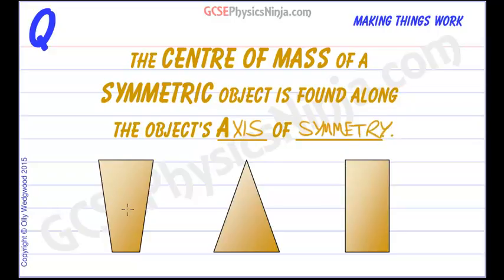So, for example, if we take these three objects here, this trapezium shape has only got one axis of symmetry and so we know that the center of mass must lie somewhere along that line.